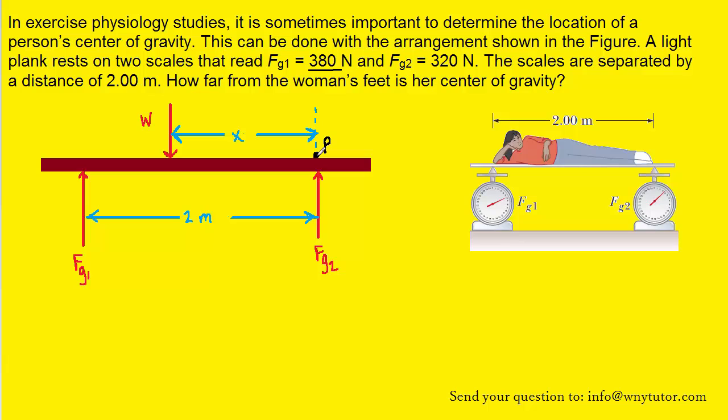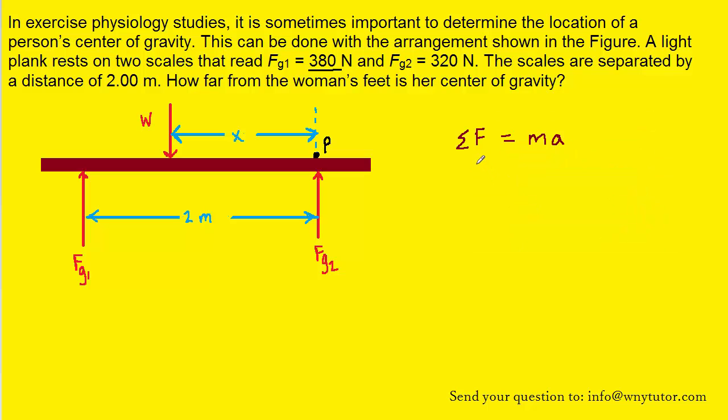Which of course says that the sum of the forces is equal to MA. Now in this case, the plank is at equilibrium. And what that means is the acceleration is equal to zero. So actually the right side of this equation can be set equal to zero.